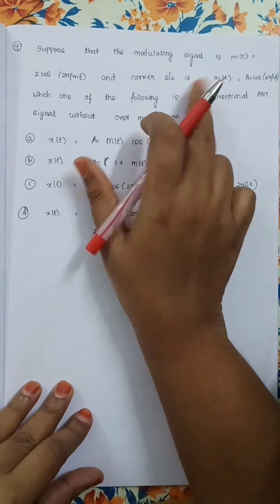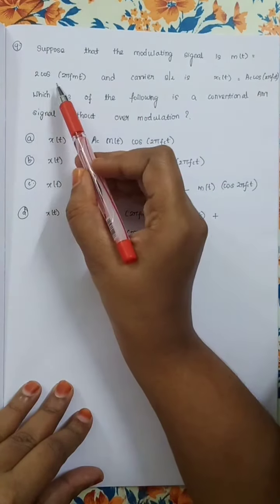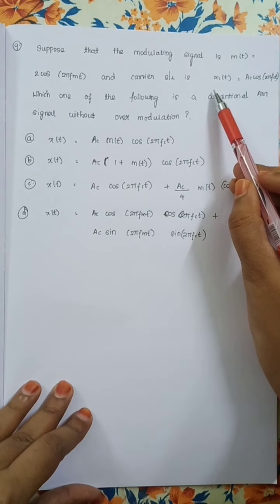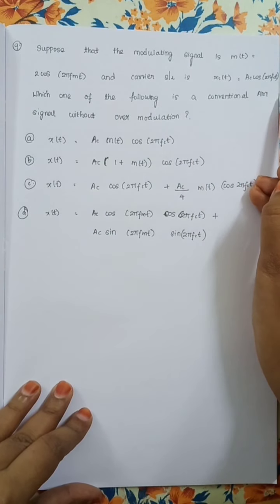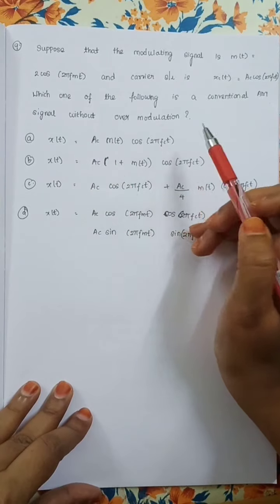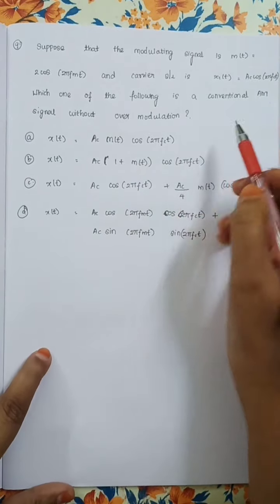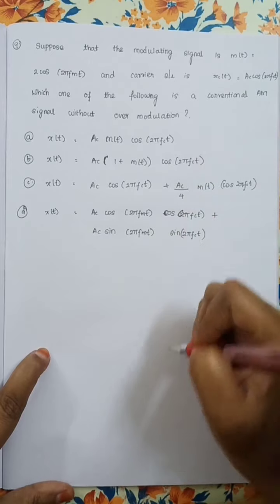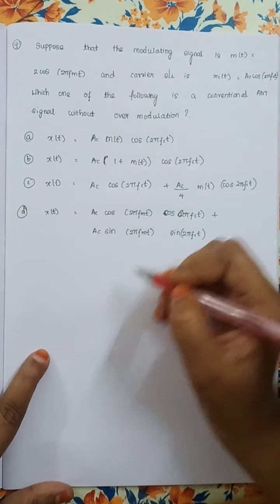So let's move on to the question. Suppose that the modulating signal is m(t) = 2cos(2π·fm·t) and the carrier signal is xc(t) = Ac·cos(2π·fc·t). Which one of the following is a conventional AM signal without over-modulation?